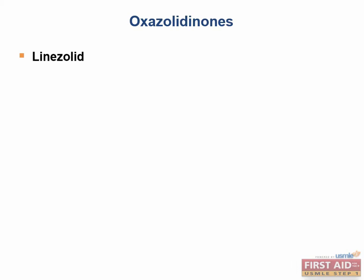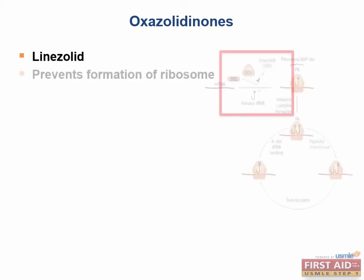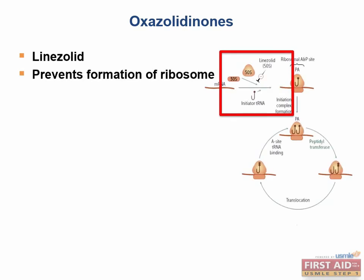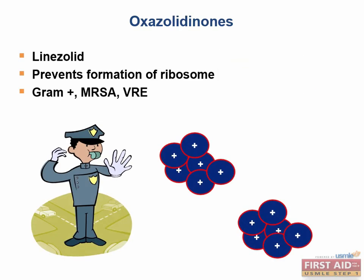Now let's discuss linezolid, a newer antibiotic therapy. Linezolid inhibits the 50S ribosomal subunit by preventing the formation of the mRNA-ribosomal subunit complex. It is a bacteriostatic drug effective only against gram-positive organisms, similar to vancomycin, and is typically saved as a last resort for cases of MRSA where vancomycin cannot be used, or in cases of vancomycin-resistant enterococci.